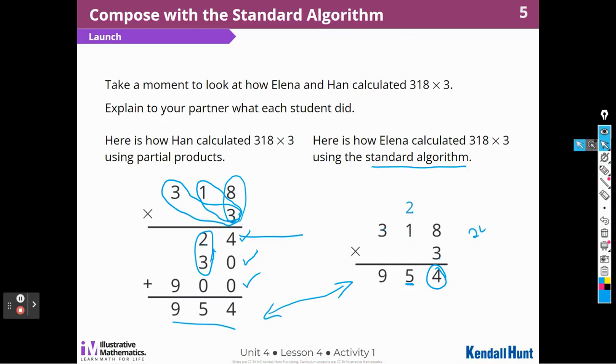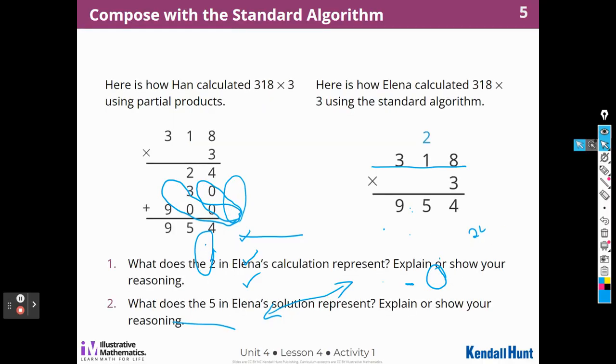That's a different way of doing it. This is not with partial products, and the other is with partial products. So what does the 2 in Alina's calculation represent? Explain or show your reasoning.